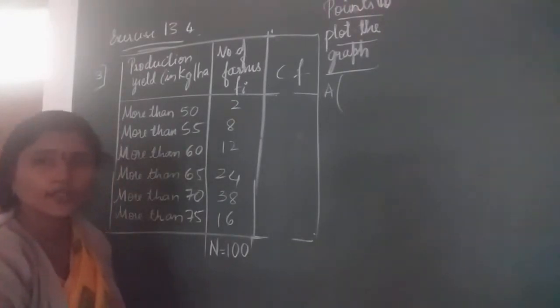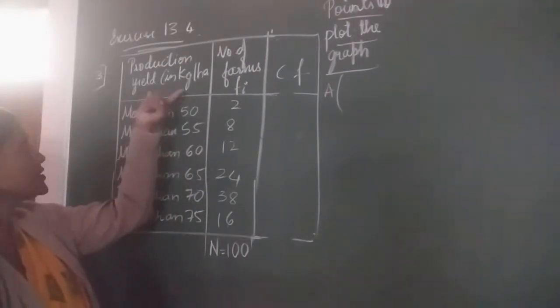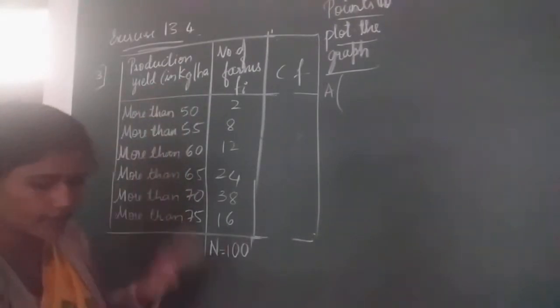They have given a table here. In the table, production yield per hectare of wheat from a hundred farms of that village has been provided. In the first column, let us take production yield in terms of kg per hectare. They told you to change the distribution to a more than type distribution and draw it.